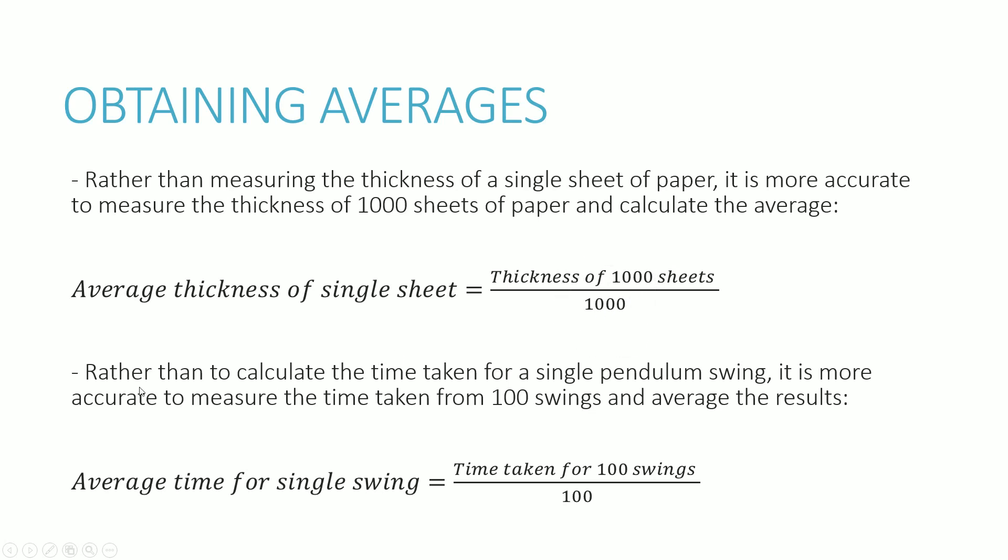And so that can also apply to other things, like when you're calculating the time taken for a single pendulum swing, it is more accurate to perhaps measure the time taken for 100 swings, and then averaging the results by dividing that by 100. Instead of, let's just say, starting the timer when you start the swing, and then click the timer to stop it when the swing is over, that's an example of measuring one single swing, which is less accurate. So again, if you were to put that in the formula, it's the average time for a single swing would be equal to time taken for 100 swings, you divide that by 100 to get a single swing.